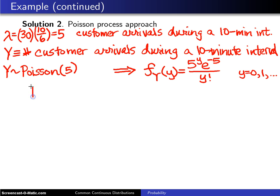Finally, we want the probability of eight or more customers in that 10-minute interval. So we want the probability Y is greater than or equal to 8, and so that will be the sum from y equals 8 to infinity of f sub Y of y.